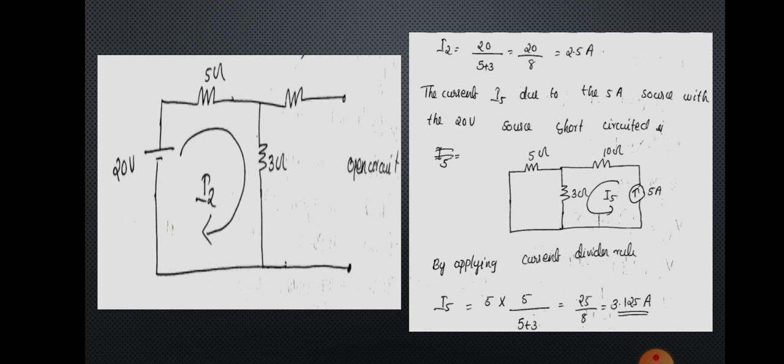We want to find the current through the 3 ohm resistance. You can see that 3 ohm and 5 ohm are in parallel, and the current source is given, so we apply the current divider rule. By current divider rule, the current through the 3 ohm resistance equals total current times other branch resistance divided by total resistance. Let i5 be the current through 3 ohm: i5 = 5 × 5 / (5 + 3) = 25/8 = 3.125 ampere.